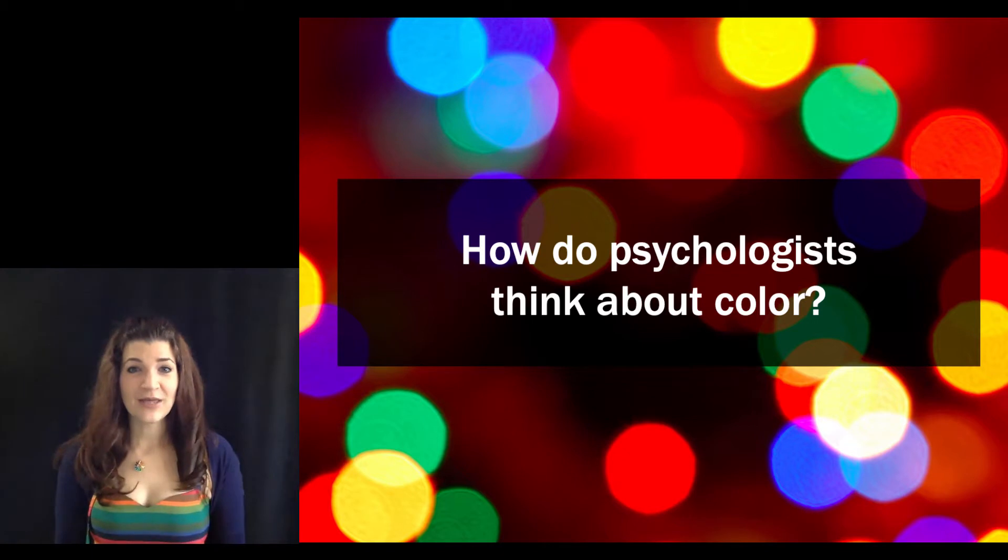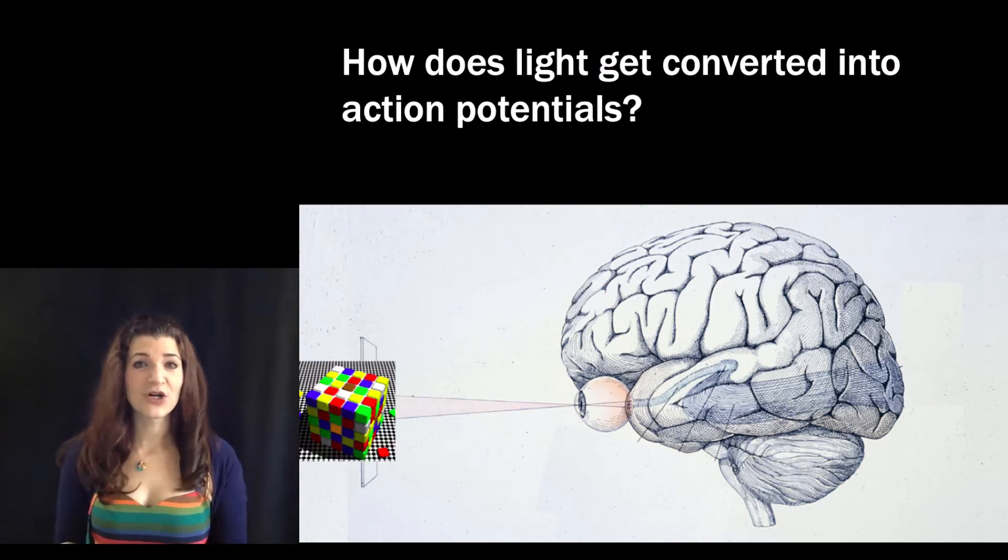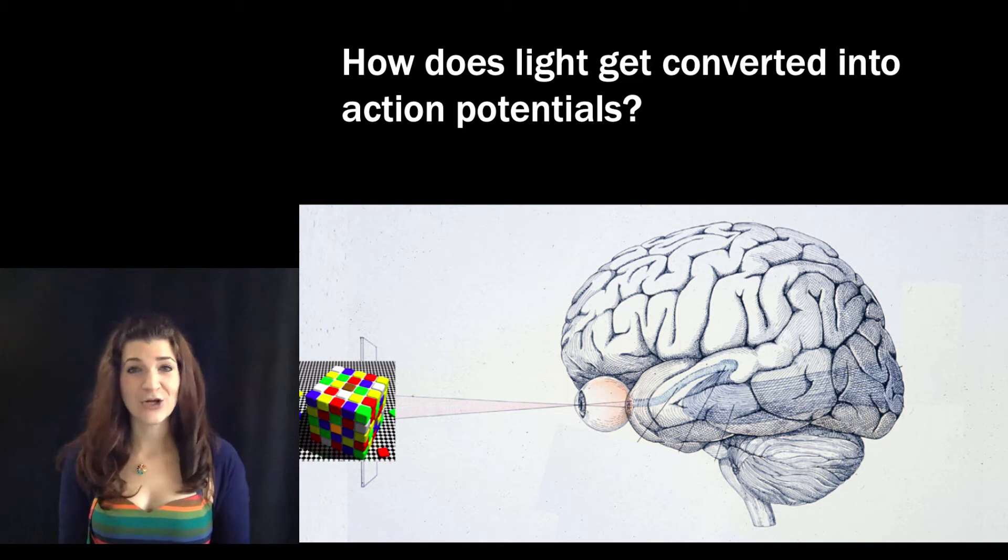This term you'll be hearing from me about several processes in color vision through a psychological lens. The first of these is how light is converted into neural code, that is changed into a format that the brain can understand.